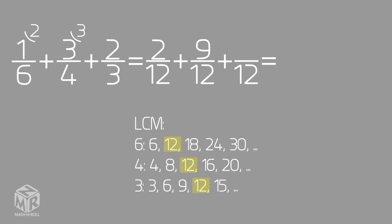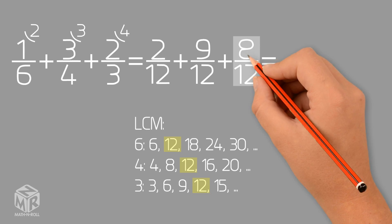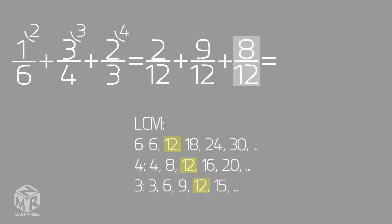To find the equivalent fraction of 2 over 3, we multiply both parts of the fraction — the numerator and the denominator — by 4. This gives us 8 over 12.